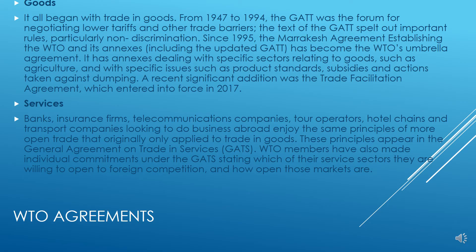In terms of goods, trade in goods is where it all began. From 1947–94, GATT was the forum for negotiating lower tariffs and other trade barriers. The text of the General Agreement on Tariffs and Trade spelled out important rules, particularly non-discrimination. Since 1995, the Marrakesh Agreement establishing the WTO and its annexes, including the upgraded GATT, has become the WTO's umbrella agreement. It has annexes dealing with specific sectors such as agriculture and specific issues such as product standards, subsidies, and actions taken against dumping. A recent significant addition was the Trade Facilitation Agreement, which entered into force in 2017.